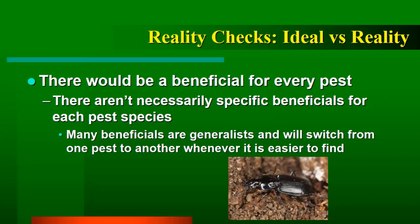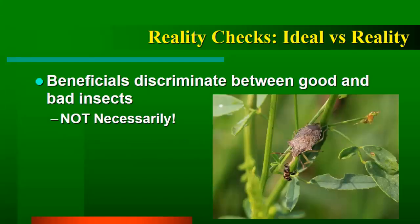Ground beetles are a major ally in our agricultural fields, present from the beginning to the end of the season. They'll switch from one prey species to another based on which is most abundant at the time. Being ground beetles, they're associated with the soil, and a lot of our caterpillar pests that are associated with field crops tend to at some point end up on the soil surface — so they do wipe out a lot of caterpillars. Do they wipe them out fast enough to prevent crop injury? Unfortunately not. But if you wiped out those ground beetles entirely, you'd have much greater problems with caterpillars than if you hadn't.